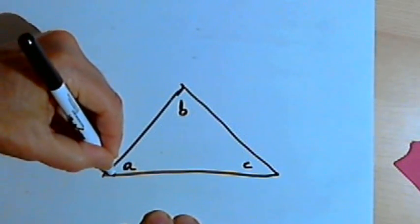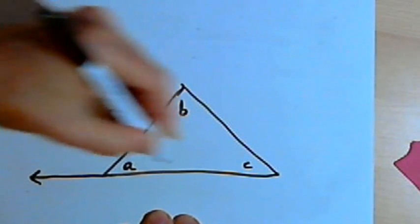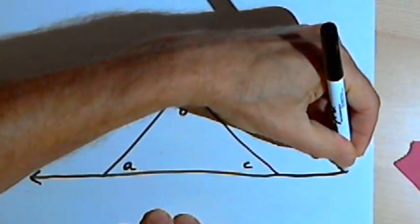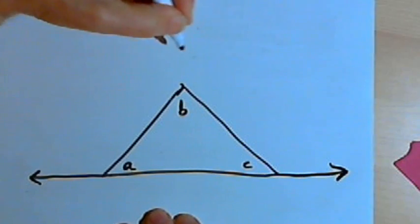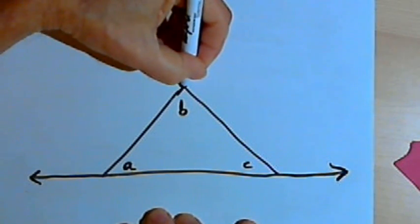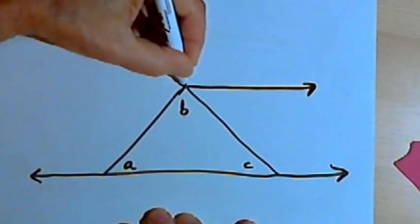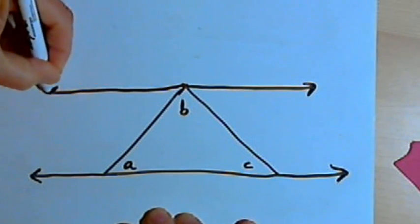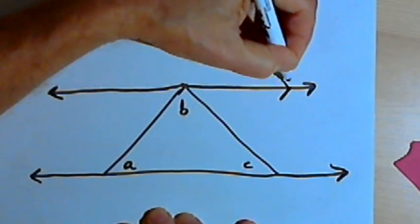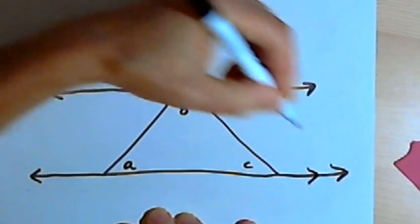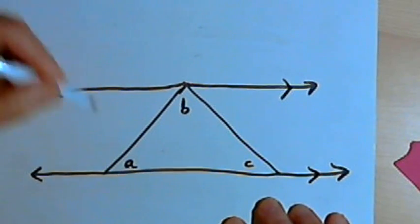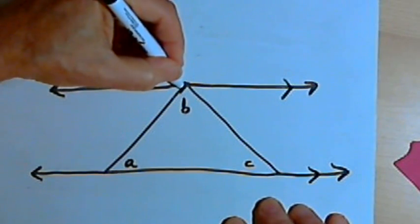And then I'm going to extend the base so it's a line, and I'm going to draw a line parallel to the base at the top of the triangle. So now I've got two parallel lines. I'm also going to extend each of the other sides.